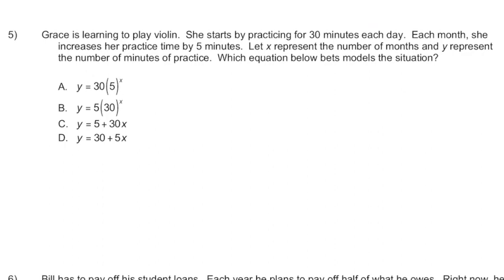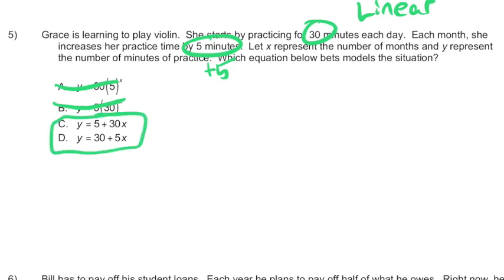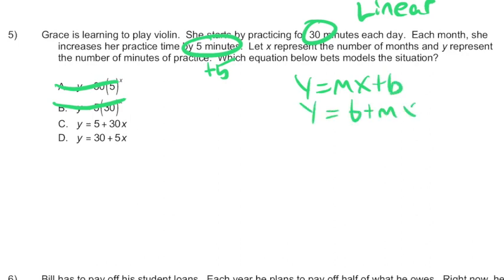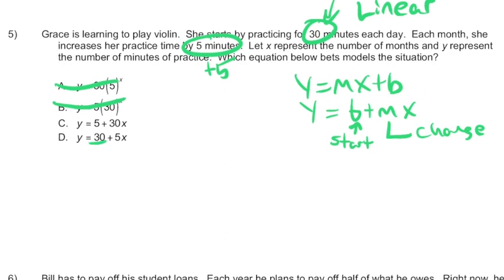This next problem talks about Grace learning how to play violin. She starts with 30 minutes each day of practice, and each month she increases that amount by five. Increases means addition, so she's adding five each time. This is a linear problem, since it's adding every time. So we can rule out the exponentials, and we're looking to start with 30 and increase by five. Be careful because these aren't exactly written in slope intercept form. We're used to seeing y = mx + b, but they've been writing it as y = b + mx. The number attached to x is always your change amount, and the number alone is always your starting amount. Since we're starting at 30, that should be the number that's not attached to x. And since we're changing by five, that should be the number attached to x. So this is d.